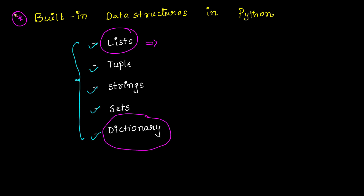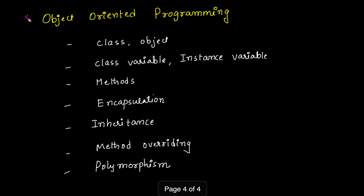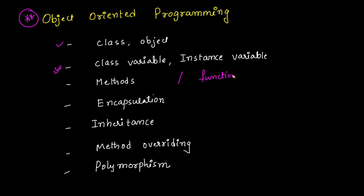The third module is slightly advanced — Object Oriented Programming, which is the most important topic in Python. Topics include class, object, class variable vs instance variable, difference between methods and functions, encapsulation, inheritance and its types, method overriding, and polymorphism. These are very important for the GATE perspective. Practice more problems from multiple websites to get good marks in Python.